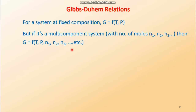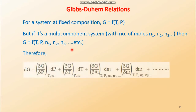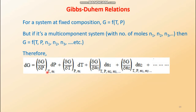So G can be expressed as a function of temperature, pressure, n1, n2, n3, etc. Its change dG can be expressed where each component changes keeping the other components constant. The partial derivative of G with respect to pressure is volume; with respect to temperature is negative entropy; and with respect to component nᵢ is the chemical potential μᵢ. So dG equals V dP minus S dT plus μ1 dN1 plus μ2 dN2 and so on.